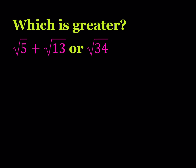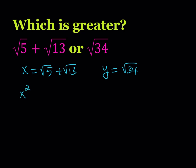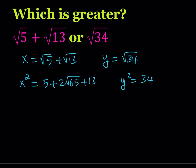Let's go ahead and call the first number x, and call the second number y. Then I'd like to get rid of some of the radicals. Let's square both sides — we get a squared plus 2ab plus b squared, and here we get 34. So I'm going to compare x squared and y squared first, and then go back and compare this to x and y.